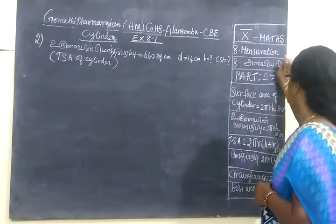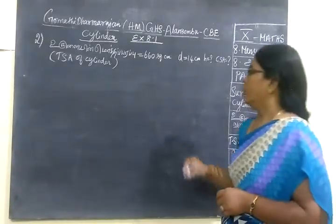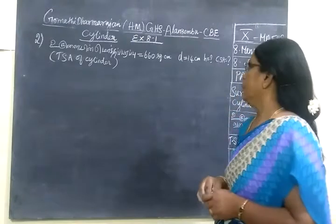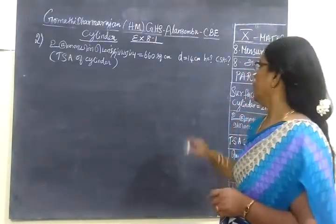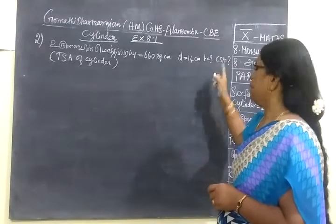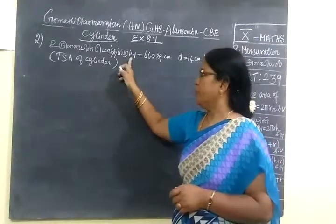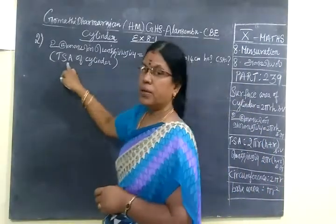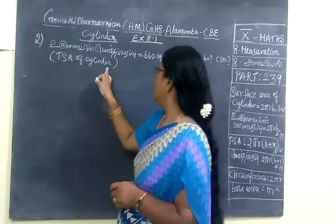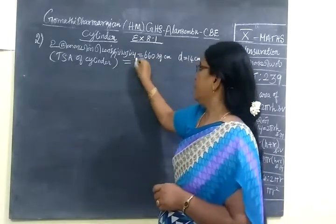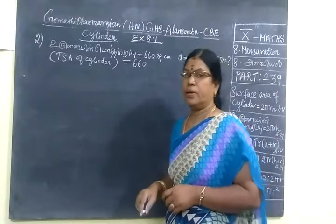Now, we see for problem 239. The total surface area of cylinder is equal to 660 square centimeter.